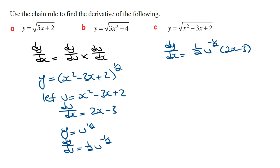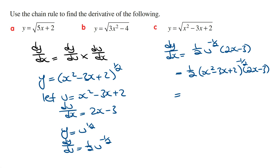We can't simplify this any further, so we replace u as a function of x, giving a half times x squared minus 3x plus 2 raised to the power of minus a half, times 2x minus 3. Finally, rewriting to include the square root sign, this is equivalent to 2x minus 3 all over 2 times the square root of x squared minus 3x plus 2.